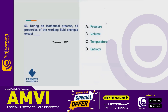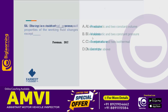Next question: during an isothermal process, all properties of the working fluid change except what? The answer is temperature. In an isothermal process, temperature remains constant — that is the definition of an isothermal process. So temperature does not change.